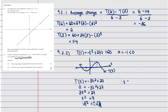Therefore t = ±3, meaning t = −3 or t = 3. The value t = −3 corresponds to the minimum turning point, and t = 3 corresponds to the maximum. So the answer is t = 3, because that is when the temperature is at its maximum.